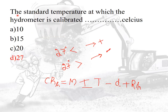The second question is: the standard temperature at which the hydrometer is calibrated is 27 degree Celsius. If the temperature is greater than 27 degree Celsius, the correction is positive. If the temperature is less than 27 degree Celsius, the correction is negative.